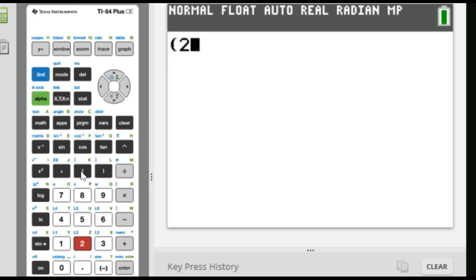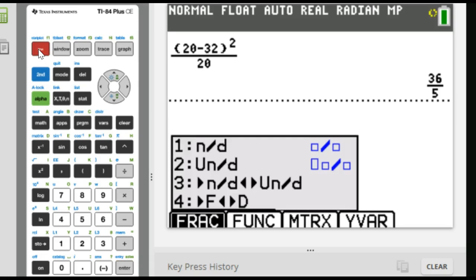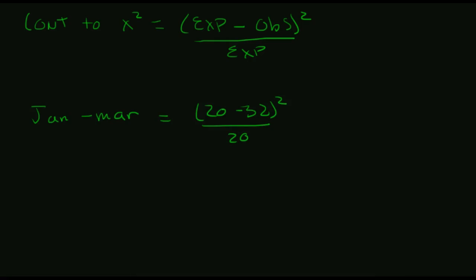So let's get the calculator out here. So my expected value was 20, and I'm going to subtract from that, let's pretty this up a little bit, we'll use the alpha y equals and make a fraction. So my expected value is 20. I'm going to subtract from that 32. And we're going to square that and put that over my expected value, 20. And this is going to give me 36 over 5. Switch that from a fraction to a decimal, and that's 7.2. So my contribution from this is approximately 7.2.